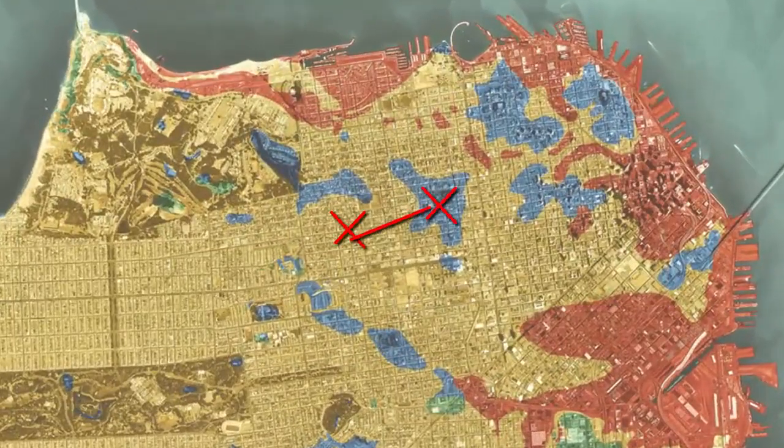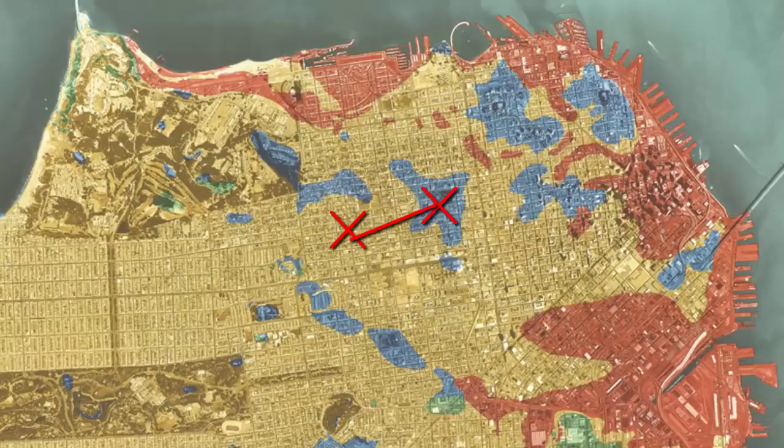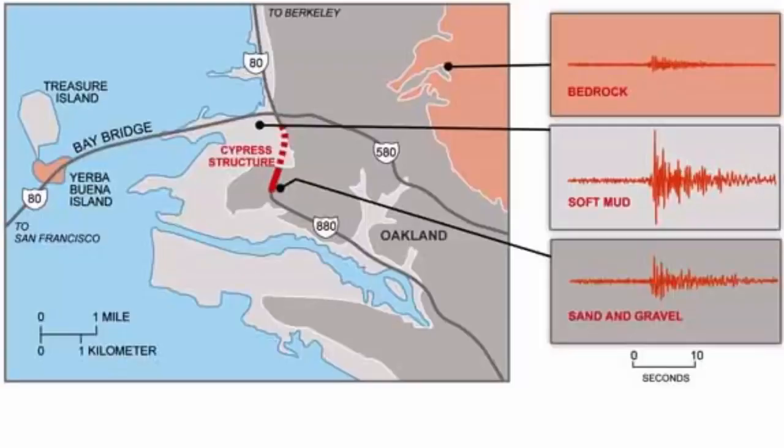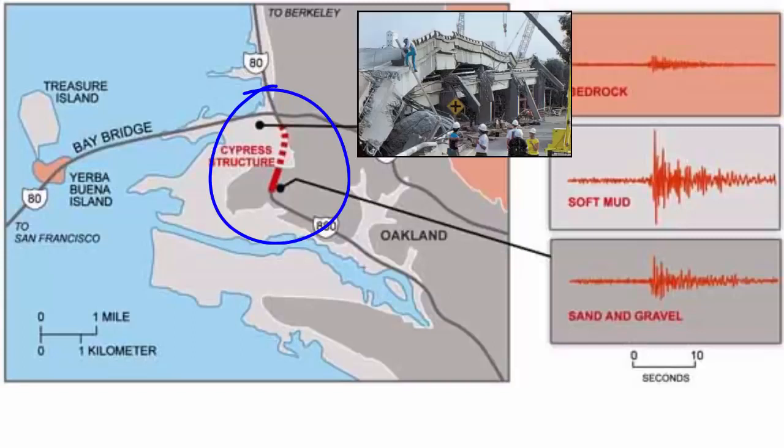It's also important to prevent structures from being built across multiple materials that shake differently. For example, during the 1989 Loma Prieta earthquake in California, for one of the highways that fell down in the East Bay, one support was built on sand and the other on mud. The two supports shook with different motions during the earthquake and pulled the material supported between them apart.